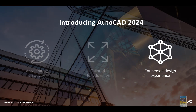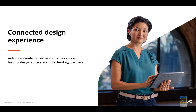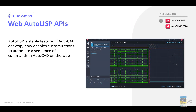The third area is Connected Design Experience — talking about the ecosystem of the software and how to use it across multiple platforms and work collaboratively with all of your partners. The Web AutoLISP API is now available, continuing from the previous version in the full-blown version of AutoCAD 2024. It allows for customization and automation of a sequence of automated commands in AutoCAD on the web.